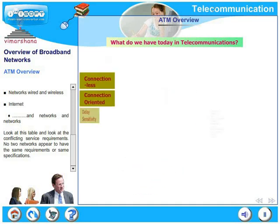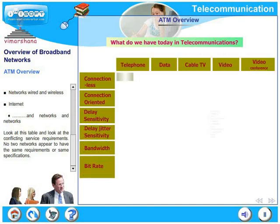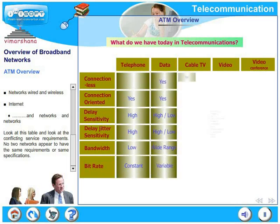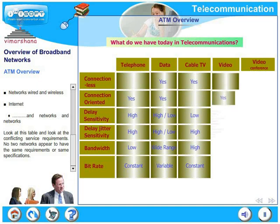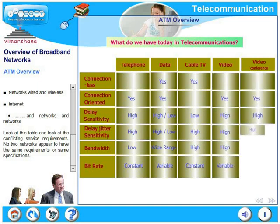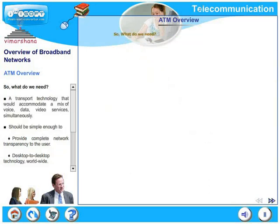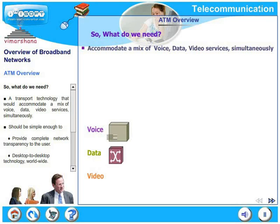Look at this table and look at the conflicting service requirements for each of these networks. It appears that no two networks have the same requirements or the same specifications. So we have a huge conflict out here. What do we need? A transfer technology that would accommodate a mix of voice, data and video services simultaneously.